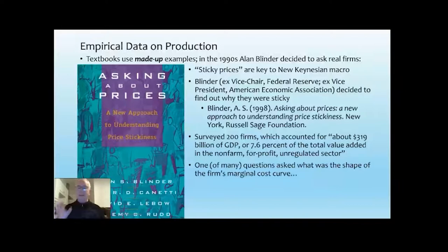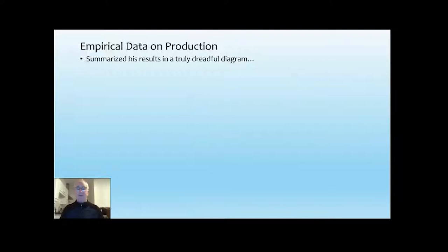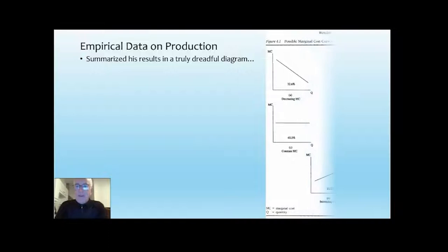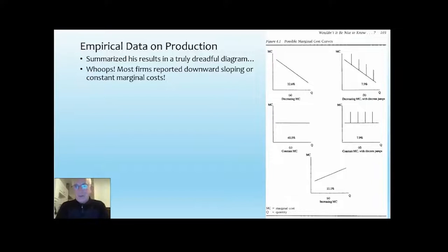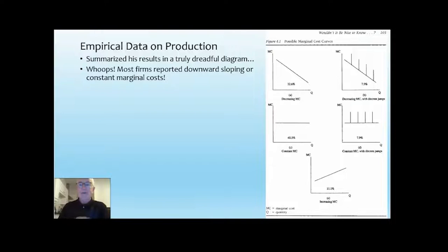One of the many questions the survey asked is: what is the shape of the firm's marginal cost curve? Of course, what he was expecting to get was a rising marginal cost curve. He summarised the findings in a truly dreadful diagram — I've never seen anything this bad in any major book. What he found is that most firms report not rising marginal costs, which is what theory tells students is the real world, but falling marginal costs. So 32.6% said they had declining marginal costs, and another 8% said declining marginal costs with spikes. 40% said constant marginal costs, and another 8% said constant marginal costs with spikes. Only 11.1% said they faced rising marginal costs.